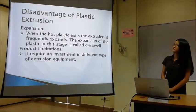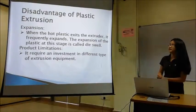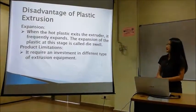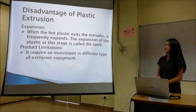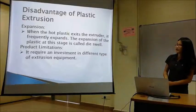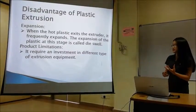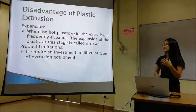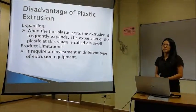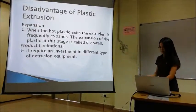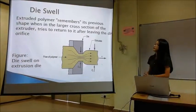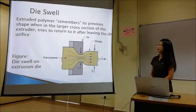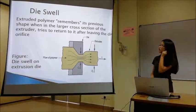The disadvantages of plastic extrusion are die swell and product limitation. Die swell occurs because the hot plastic exits the extruder and its acrylic expands. The expansion of the plastic at this stage is called die swell. For product limitation, investment in plastic extrusion for different types needs to meet different equipment requirements, so it cannot produce many shapes of extrusion product. Die swell happens because the extruded polymer remembers its previous shape and tries to return to it after leaving the die.